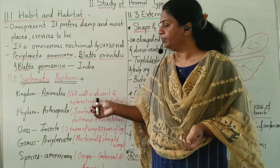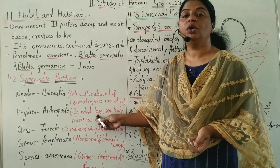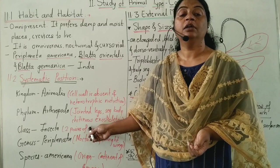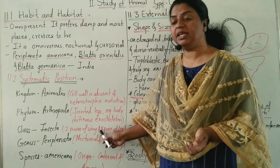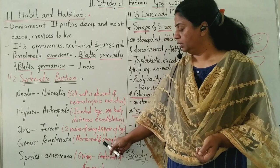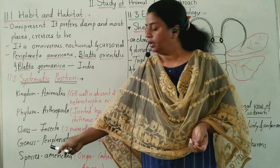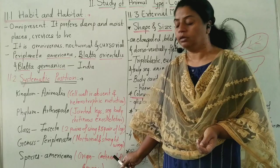Phylum: Arthropoda, because they have jointed legs, a segmented body, and the body is covered by a chitinous exoskeleton. Class: Insecta, because they have two pairs of wings and three pairs of legs. Genus: Periplaneta, because they are nocturnal and have straight wings. Species: americana, because the origin of this cockroach is on the continent of America.